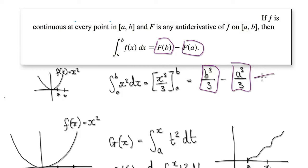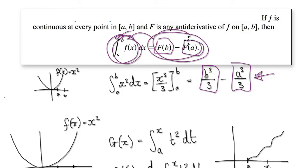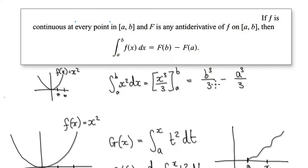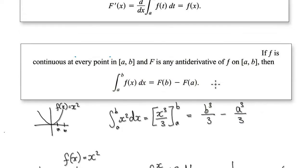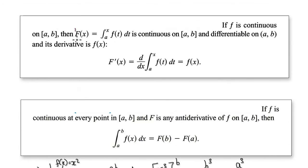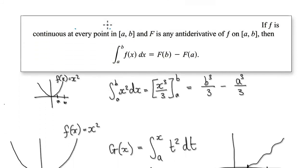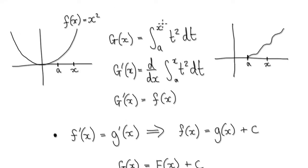Now we know the technique and we can use it, but at this stage we just don't know why it works — why is it that when you want to find the area, you would simply do this? So in this video, we're going to try and understand why it works. The fundamental theorem of calculus 1 starts out by defining a function — let's start by defining this function.